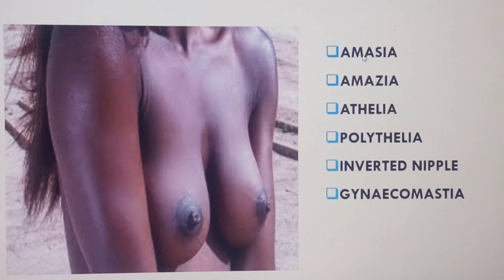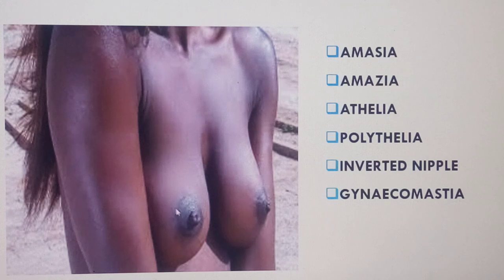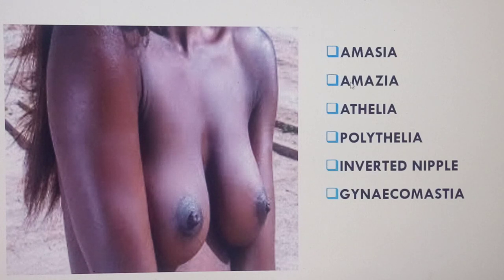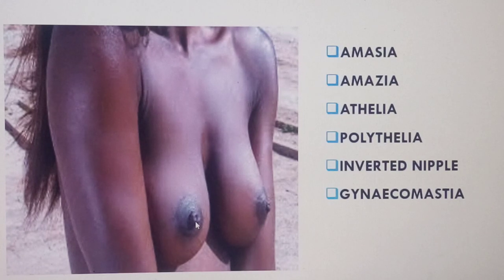Now some important terms: amazia (with an 's') is the complete absence of breast tissue alongside the nipple. Amastia is when there is absence of breast tissue but the nipple is present — absence of breast tissue but presence of the nipple.